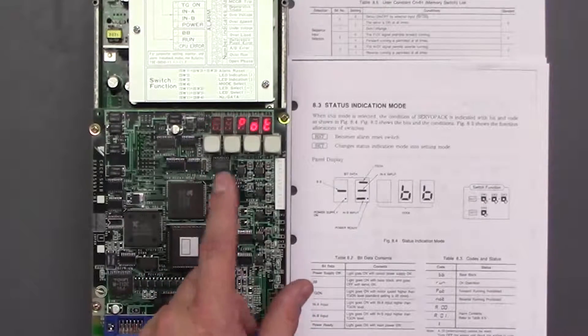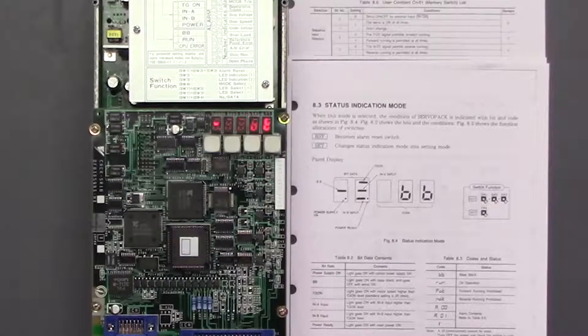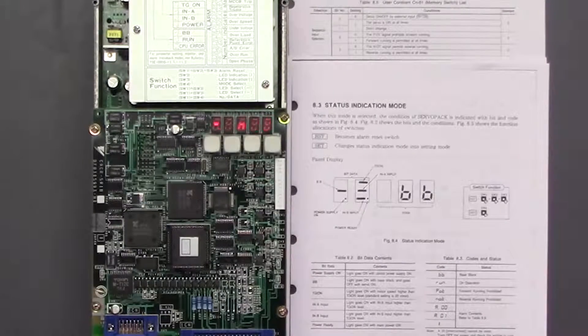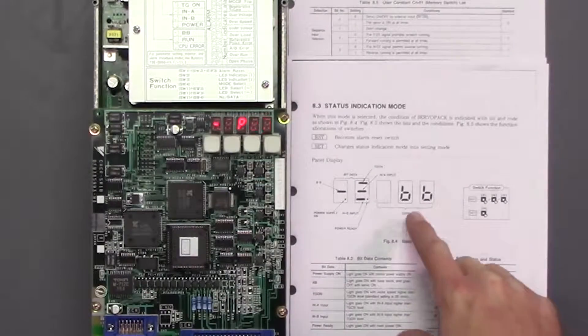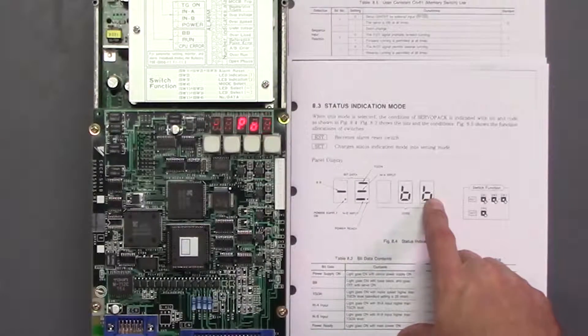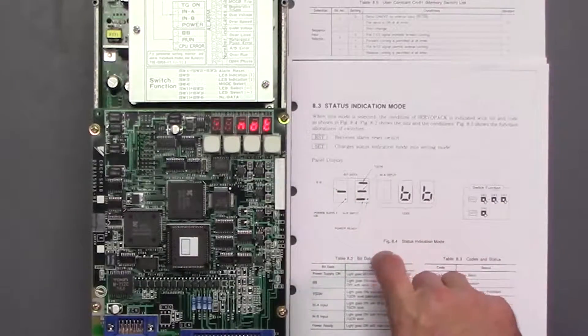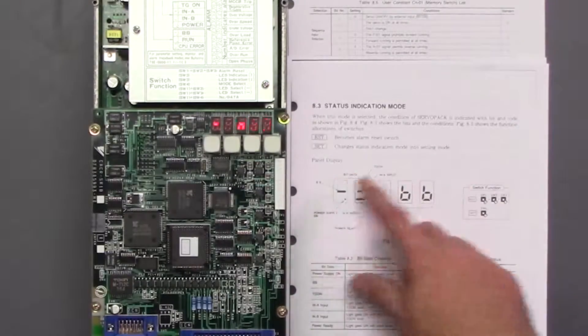So you can see we have the P0, N0 flashing, and we think we have a problem, but it's not actually a problem. We just have to change a couple of the bits, and we want to get to the BB mode with BB and the power supply on. That's what we're trying to get to.